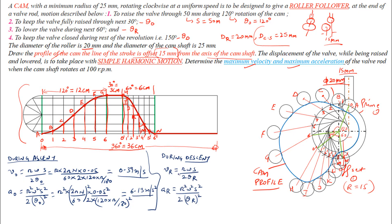Using the same formulas for the maximum velocity and maximum acceleration during descent, the only difference is that the angle is the return angle, which is 60 degrees — converted to radians before substituting. After putting in the values, the maximum velocity during descent is 0.785 m/s and the maximum acceleration during descent is 24.67 m/s².